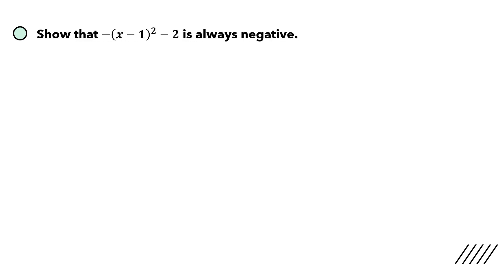Let's look at the first question. We are asked to show that this function is always negative. For such a question, we are asked to show, so it involves some kind of explanation. If you look at the function that is given, it's already in the completed square format — it's already in this format, where h and k are constants.